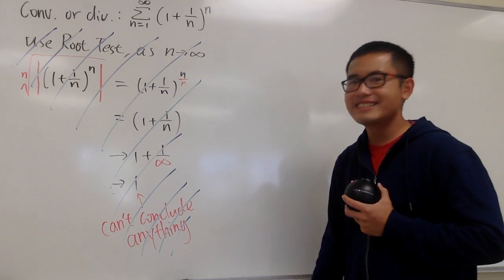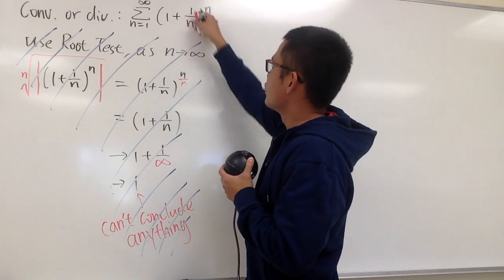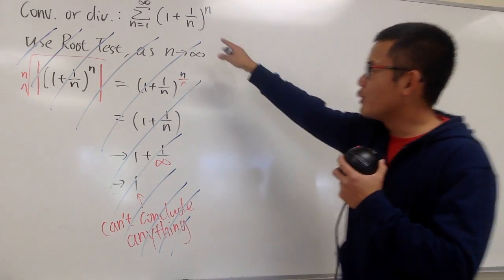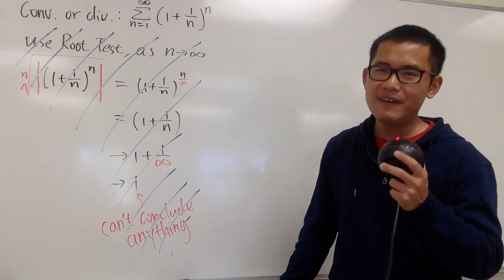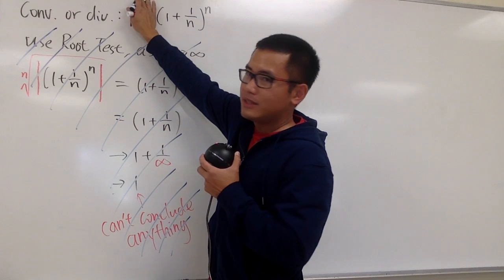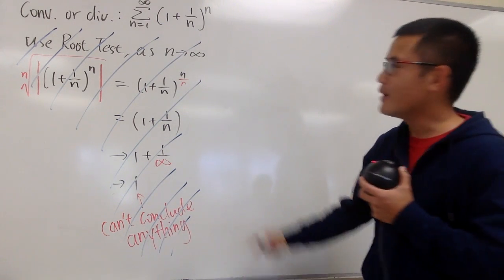We cannot use the root test. Let's look at this right here: 1 plus 1 over n raised to the nth power. Just that part itself. I think I know that pretty well from the fact, isn't it? And if you just ignore the sigma notation, you know this approaches to what, actually?